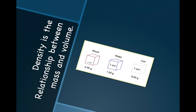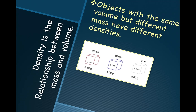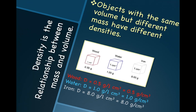Density is a relationship between mass and volume. Let's consider these three blocks of equal volume. Objects with the same volume but different mass have different densities. Density is defined as mass divided by volume. Plugging in the formula for these three cubes of wood, water, and iron, notice that wood has the lowest density because it has less mass in the same unit of volume, while iron is the most dense — it has the greatest mass in that unit of volume.